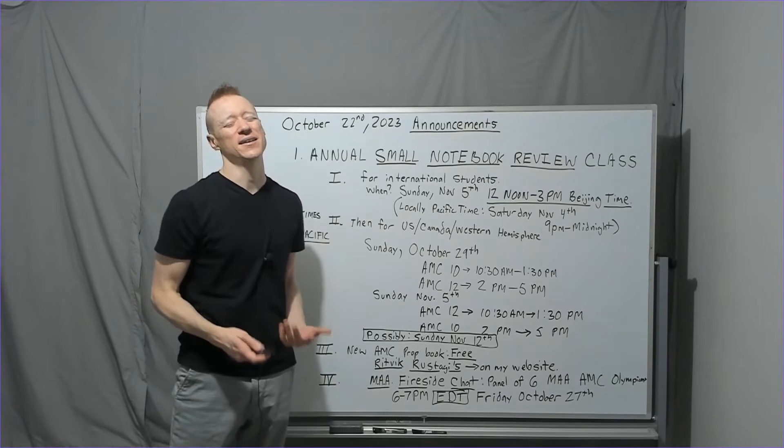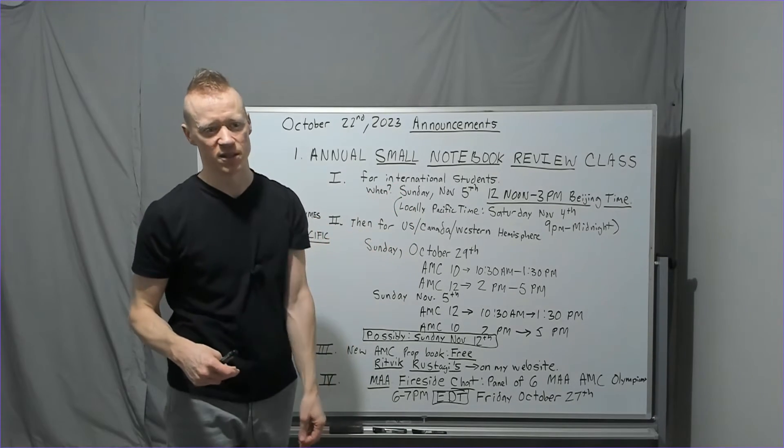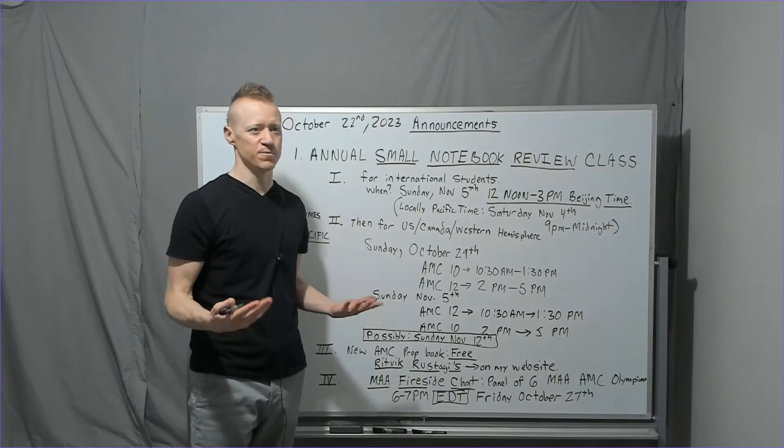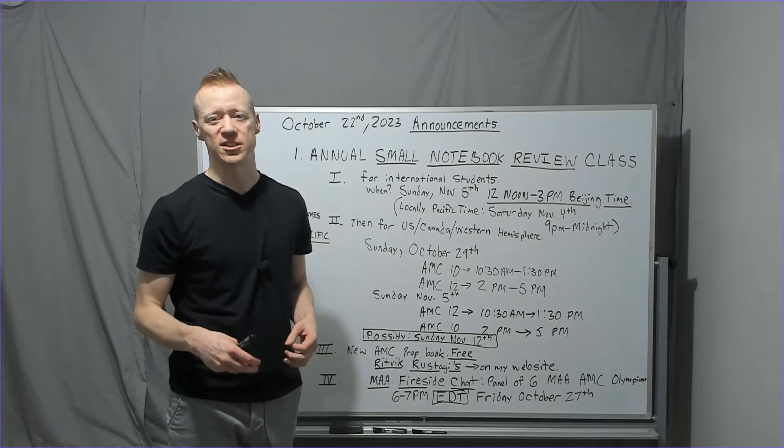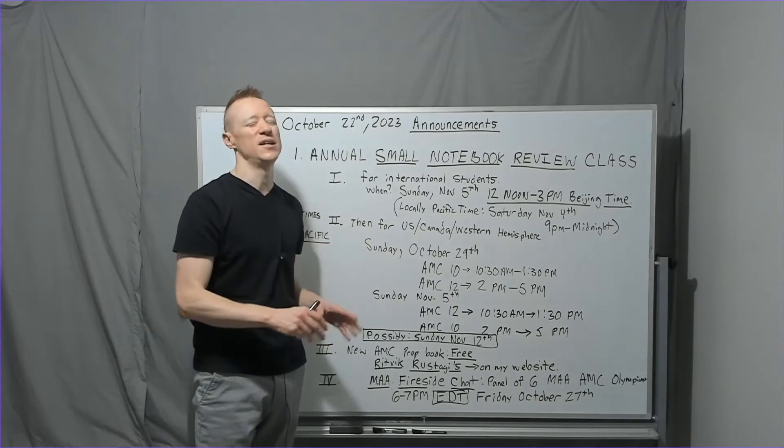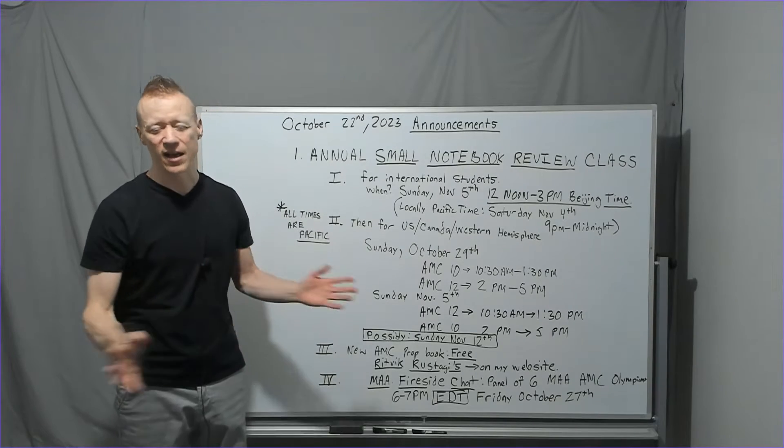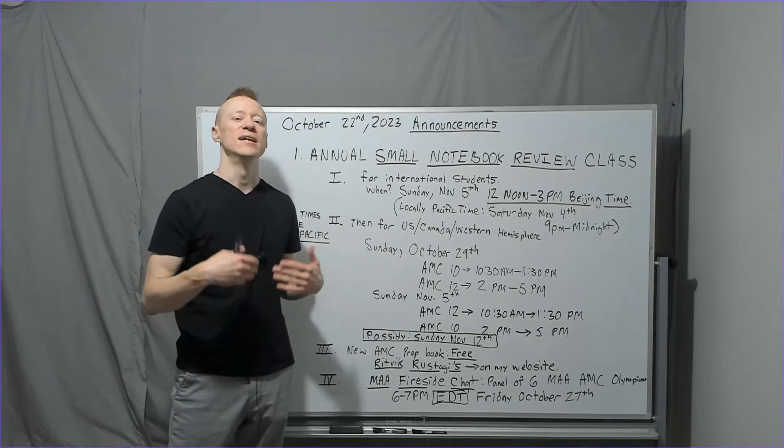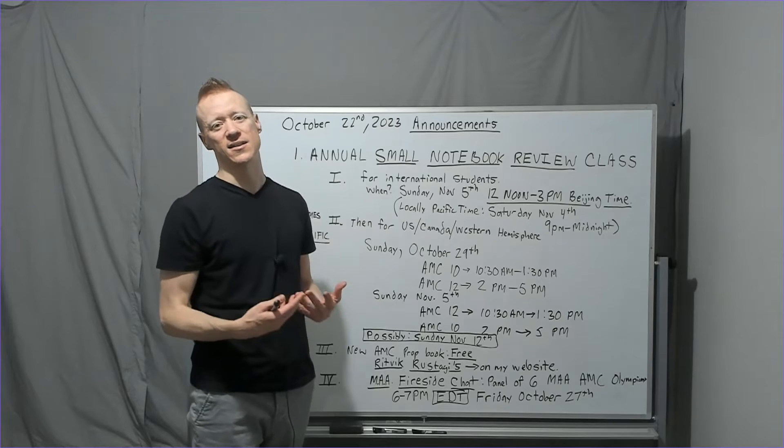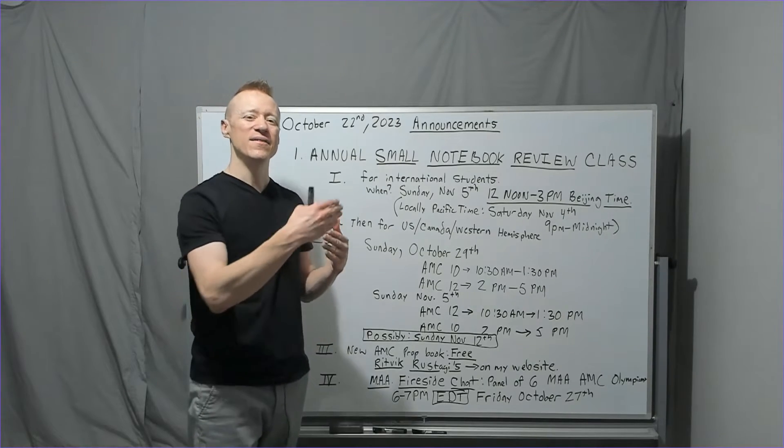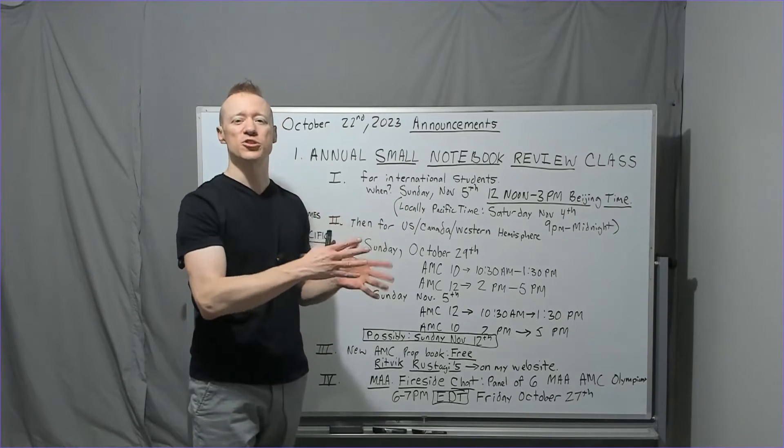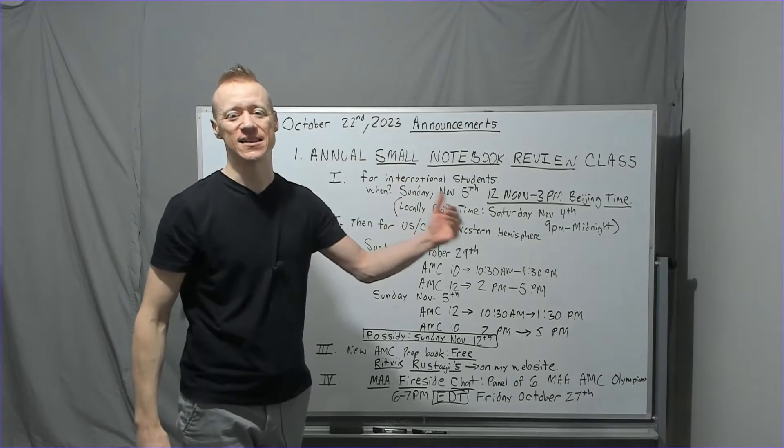These are not going to be Y equals MX plus B. What's the slope? Slope of perpendicular lines is negative reciprocals. That stuff is kind of elementary if you're taking this test. I'm not using any of that kind of material. These are going to be somewhat advanced concepts, techniques, and things like that.